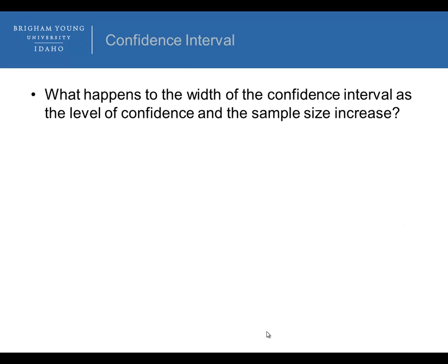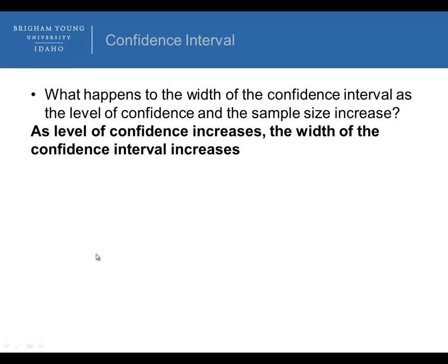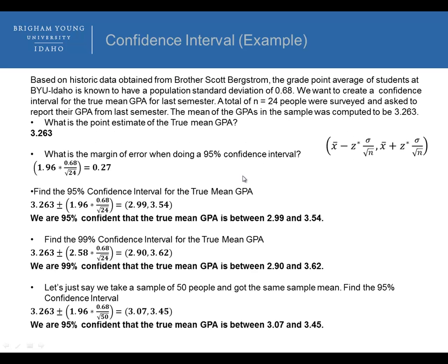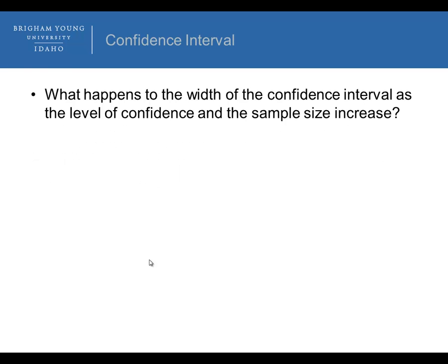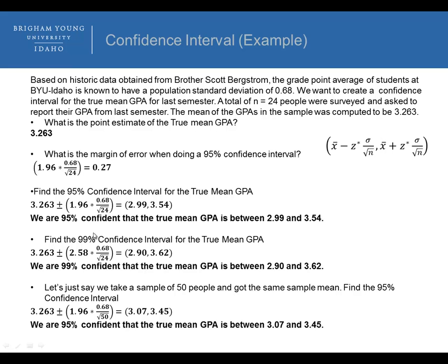Lastly, what happens to the width of the confidence interval as the level of confidence and sample size change? As the level of confidence increases, the width of the confidence interval increases — we saw this going from 95% to 99%. As the sample size increases, the width of the confidence interval decreases. I'll stop the video and continue with part two of this lesson.